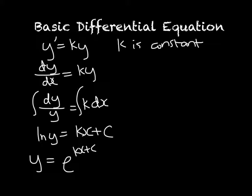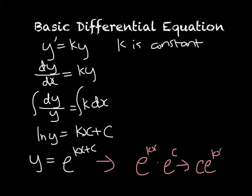What a lot of people do, instead of keeping the plus c up here, they'll say that this is equivalent to saying e to the kx times e to the power of c. And e to the power of some constant is just another constant. So in fact, what you can do is just replace it with c times e to the power of kx.